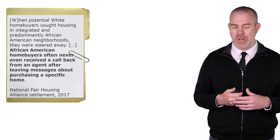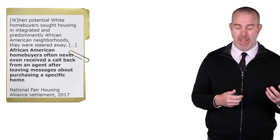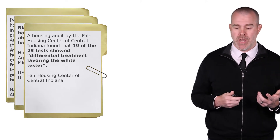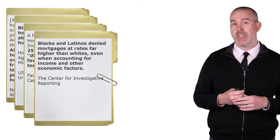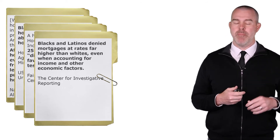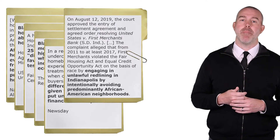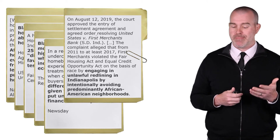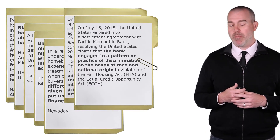This was legal until 1968 when the Fair Housing Act was passed. That seems like a long time ago for us to still be so segregated today. Unfortunately, just because it's illegal doesn't mean it's not happening. Here's a National Fair Housing Alliance settlement from 2017 — African-American homebuyers often didn't receive a callback. Black and Asian homebuyers are told about and shown fewer homes than whites. The Fair Housing Center of Central Indiana ran a matched-pairs experiment. The Center for Investigative Reporting found that Blacks and Latinos were denied mortgages at rates far higher than whites, even accounting for income and other economic factors. A Newsday investigation found people were directed to different neighborhoods, and here's one in Indianapolis: unlawful redlining.